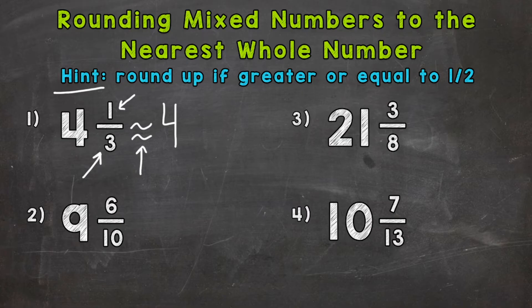This symbol here represents close to or approximately. And it's helpful when rounding because we don't want to use an equal sign. Four and one third is not equal to four. It's close to and rounds to four. So that's why I'm using that symbol there.